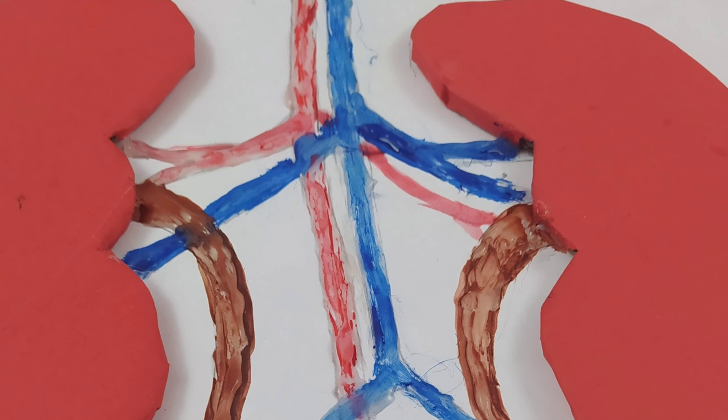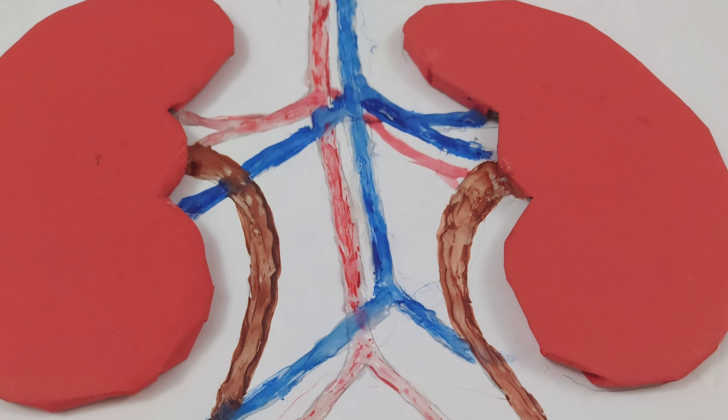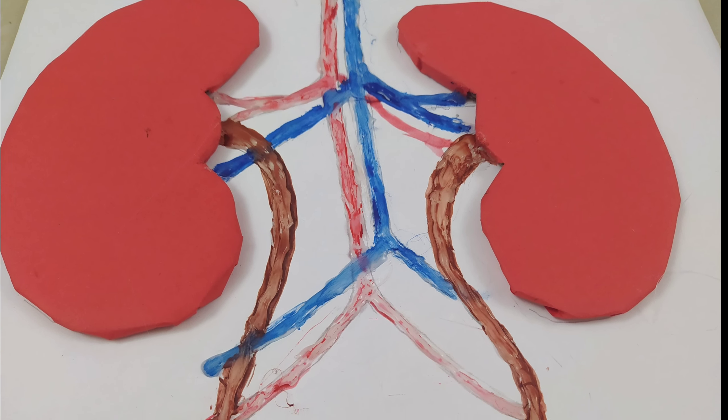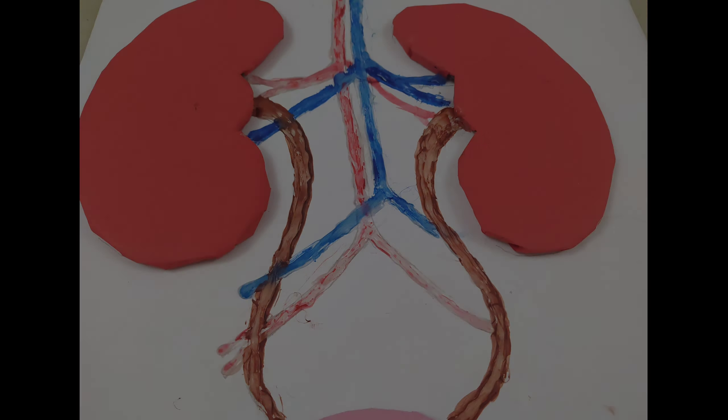Now let's give them colors. Now, I've colored the vena cava with blue, the ureter with red, and the urethra with brown.